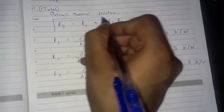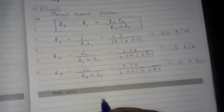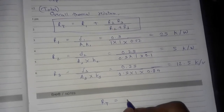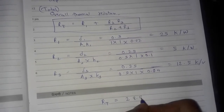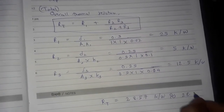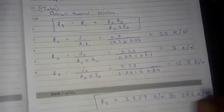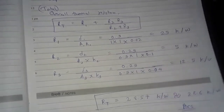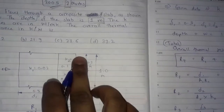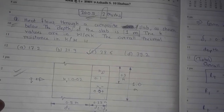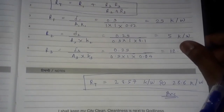Now putting the values R1 = 25, R2 = 5, and R3 = 12.5 into the equation RT = R1 + (R2 × R3)/(R2 + R3), we get RT = 28.57 kelvin per watt, which is approximately equal to 28.6 kelvin per watt. So option C is the correct answer for this question. Thank you friends for watching this video — like, share, comment, and subscribe to my channel.